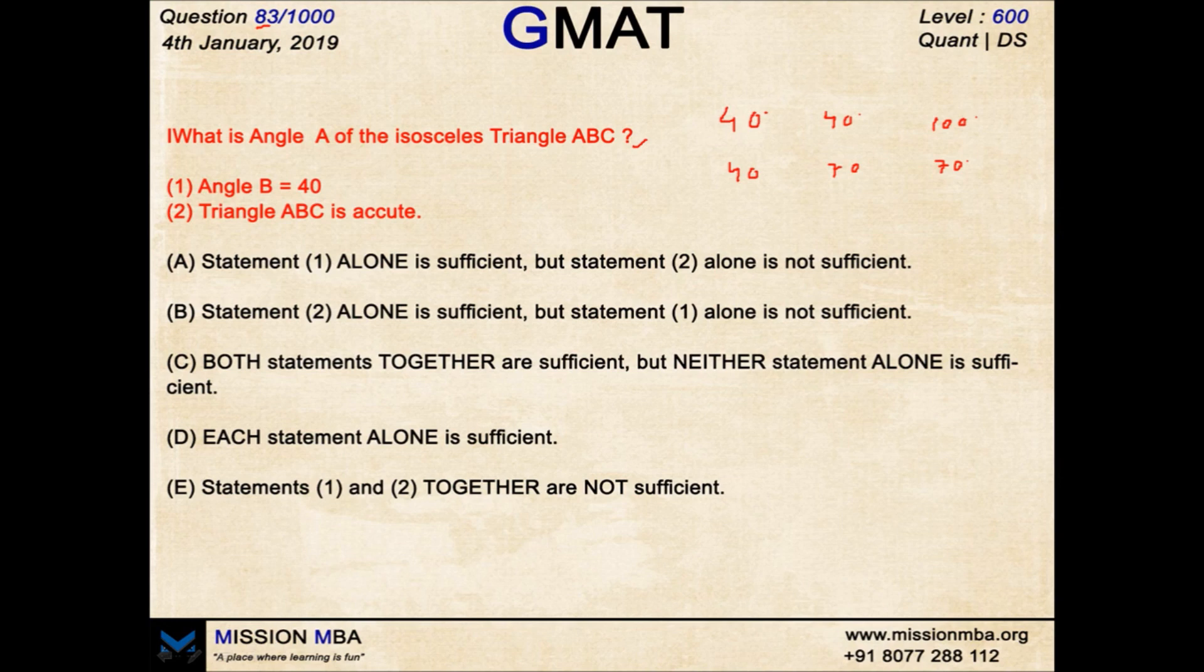But when I combine them, ABC is acute and angle B is 40. Definitely it is not the first case, so it is the second case. Now angle B is 40, angle A and C both have to be 70 degrees to make it an isosceles acute triangle.